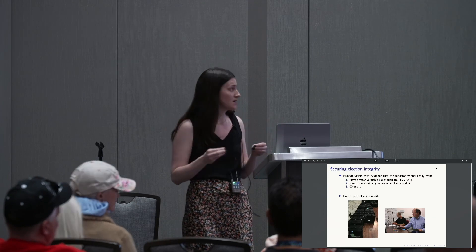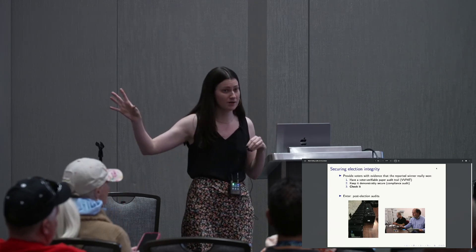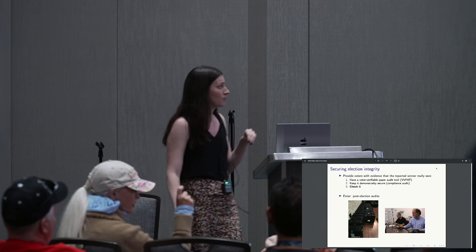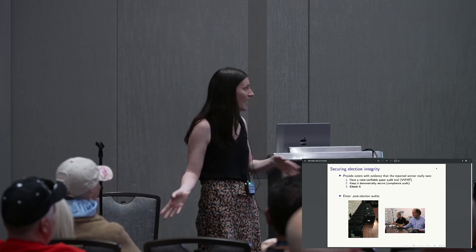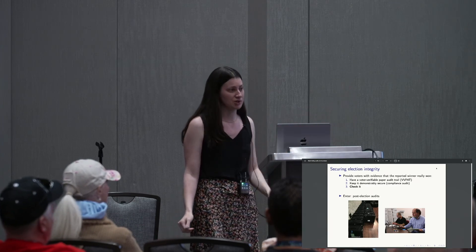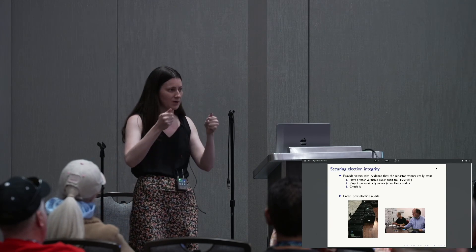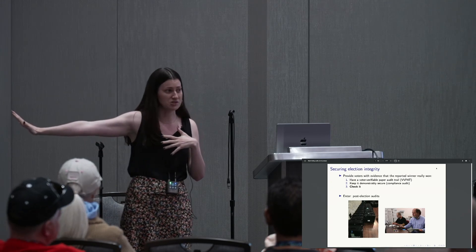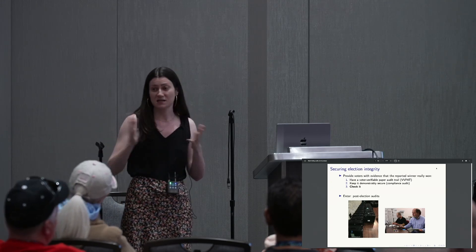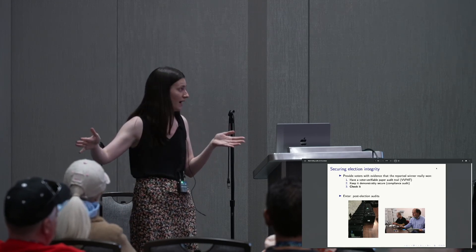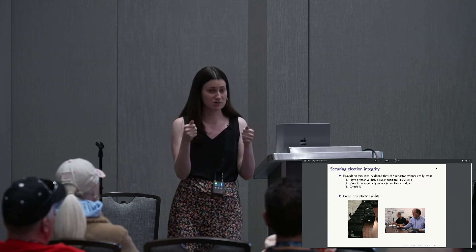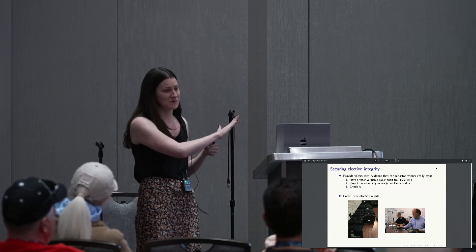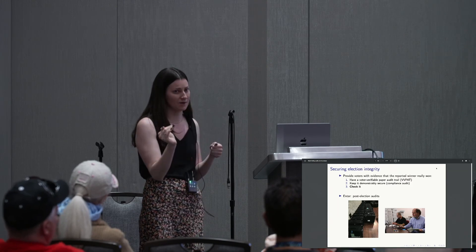The point of election audits is to provide voters with evidence that the reported winner in your election actually won. We can't take that for granted — we want a way to check that result. One thing that's super important: we have to have a voter-verifiable paper audit trail in order to do this. If we don't have paper from the election that we trust and know is kept secure, we could be auditing something where something already went wrong. If we're auditing paper where the results were flipped, it doesn't do any good. We have to know that the paper we're checking is correct.